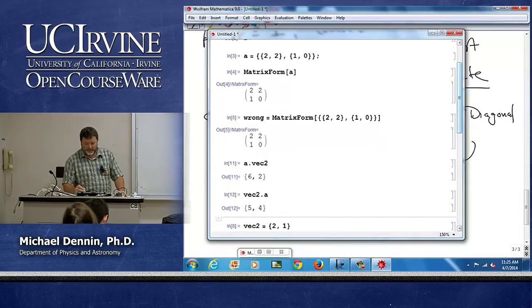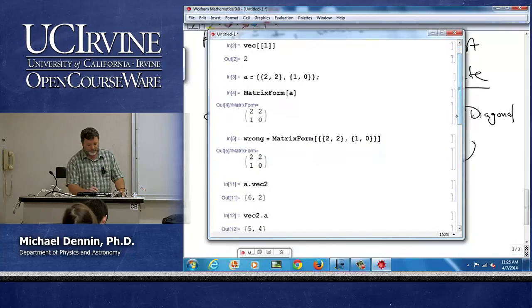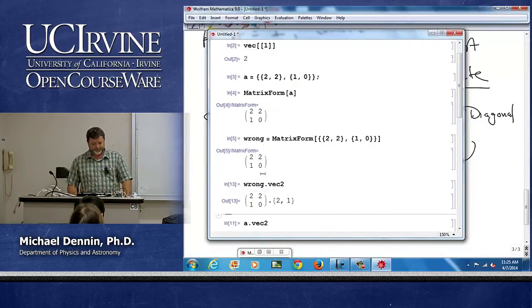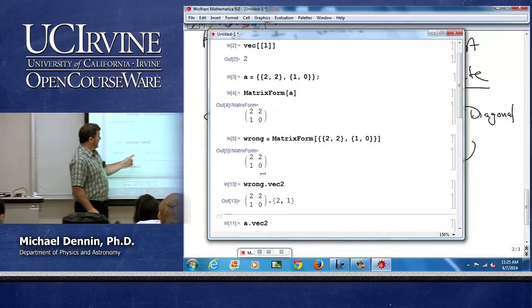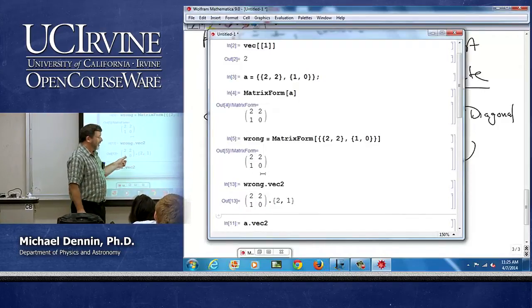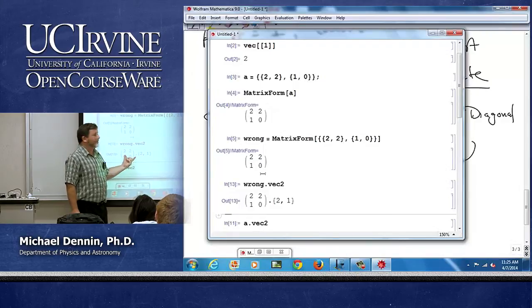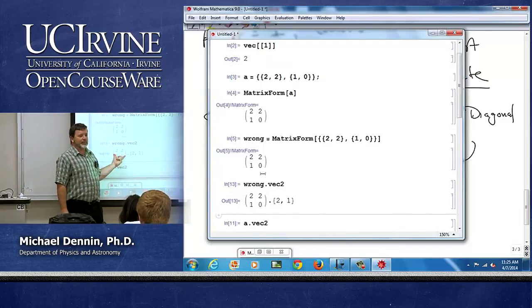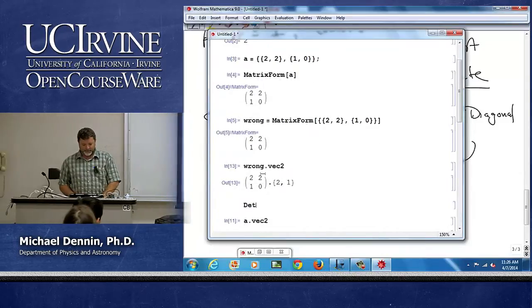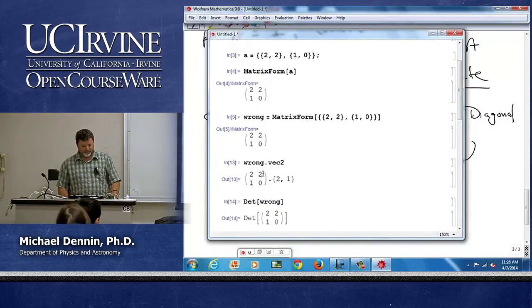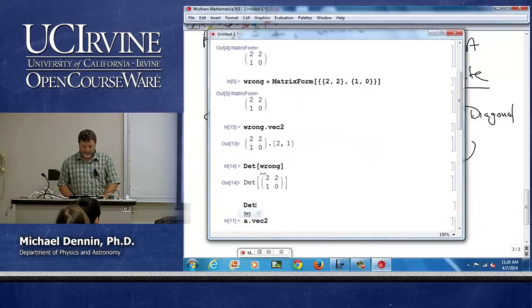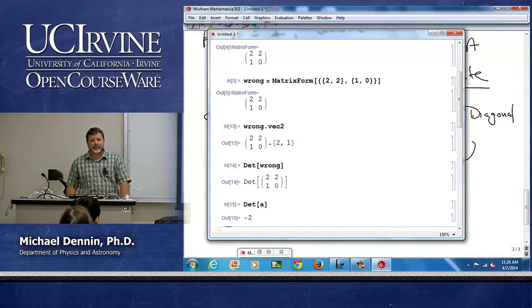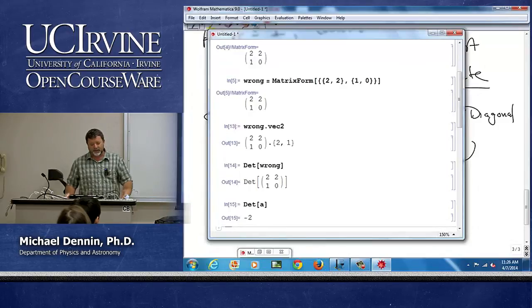But I wanted to go back. Remember, we have this object wrong. If I do wrong dot vector 2, notice it gives me wrong dot vector 2. This is not a matrix. This is a graphical object. It's something that is displayed really nicely. And that's the problem. So you can't do any matrix things to it. I can't take the determinant of it. Determinant of wrong is the determinant of wrong. However, the determinant of A is a single number. You will make this mistake because you will want your matrix to look nicely if you're not careful.